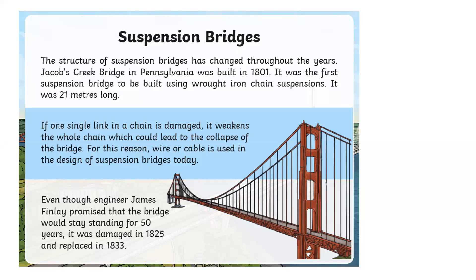The structure of a suspension bridge has changed throughout the years. Jacobs Creek Bridge in Pennsylvania was built in 1801. It was the first suspension bridge to be built using wrought iron chain suspension, and it was 21 metres long. If one single link in a chain is damaged, it weakens the whole chain, which could lead to the collapse of the bridge. For this reason, wire or cable is used in the design of suspension bridges today. Even though engineer James Finlay promised the bridge would stand for 50 years, it was damaged in 1825 and replaced in 1833.